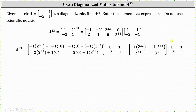Multiplying the first two matrices: in row one column one we have negative one times two to the 33rd; in row one column two, negative one times three to the 33rd; in row two column one, two times two to the power of 33; and in row two column two, one times three to the 33rd. Simplifying by dropping zero products: row one column one is negative two to the 33rd, row one column two is negative three to the 33rd, row two column one is two times two to the 33rd which is two to the 34th, and row two column two is three to the 33rd.